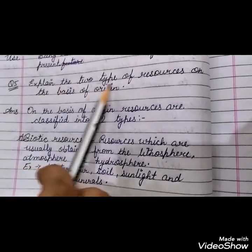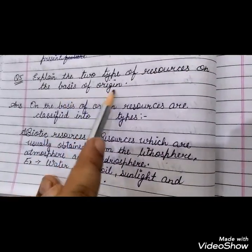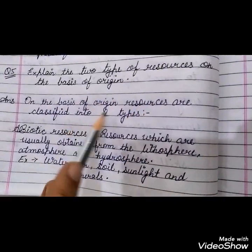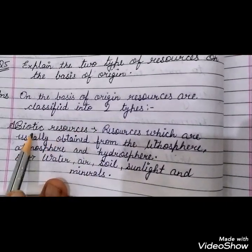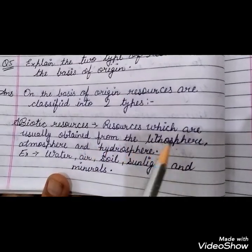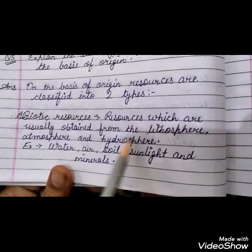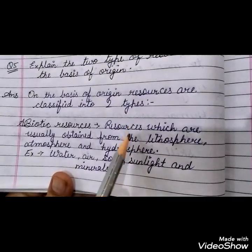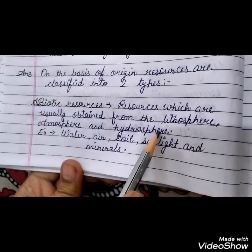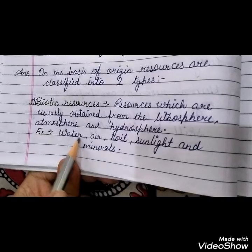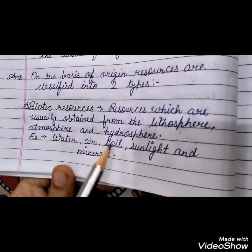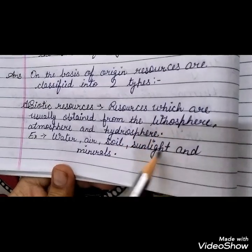Fourth: explain the two types of resources on the basis of origin. First type is abiotic resources — resources which are usually obtained from the lithosphere, atmosphere, and hydrosphere. For example, water from the hydrosphere, air from the atmosphere, soil from the lithosphere, and sunlight and minerals.